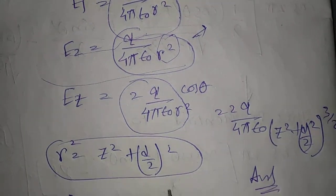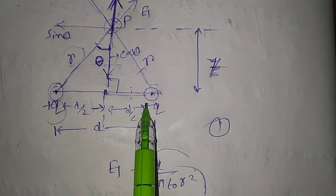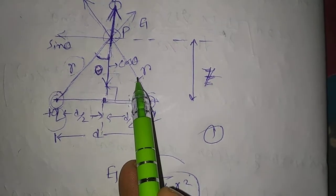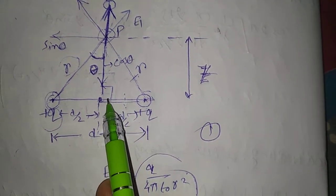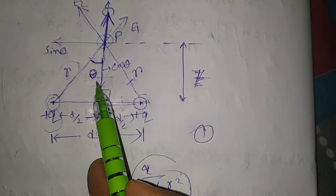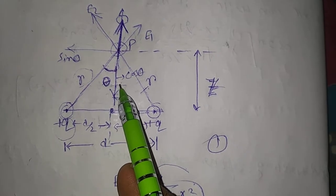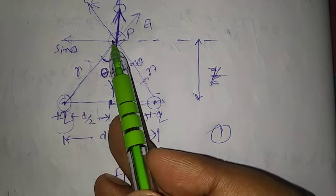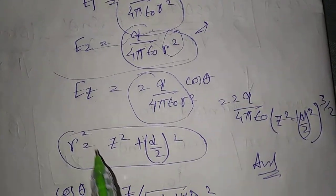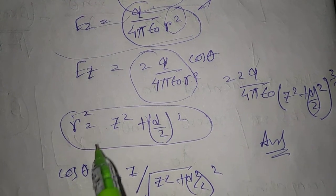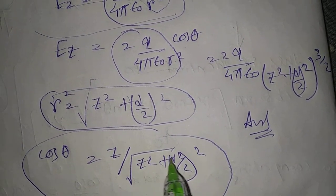From the geometry, this is a perpendicular, so the perpendicular distance is Z and the base distance is d by 2, since it cuts at the midpoint. By the Pythagorean theorem, hypotenuse squared equals perpendicular squared plus base squared, so r squared equals Z squared plus (d/2) squared. And cos theta equals base by hypotenuse, where the base is Z and hypotenuse is r, so cos theta equals Z by r, which is Z divided by the square root of Z squared plus (d/2) squared.